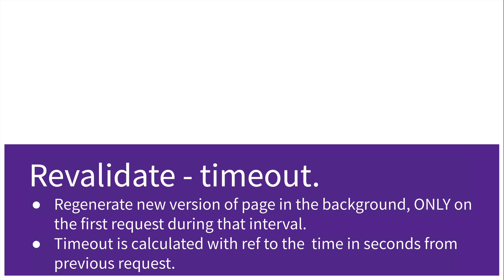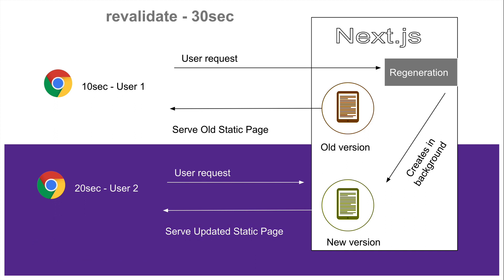The basic rule is: the regeneration of the page is only going to happen on the first request during that interval. The interval could be 60 seconds, 30 seconds, or anything — but it only happens once. Only the first user will get the old version; all other users during that interval will get the updated page. Let's say we set a timeout of 30 seconds in the revalidate key — if the first request comes in after 10 seconds, the regeneration happens.